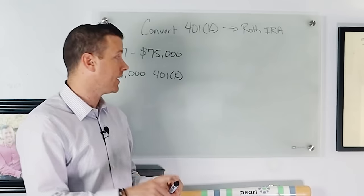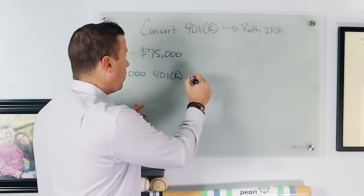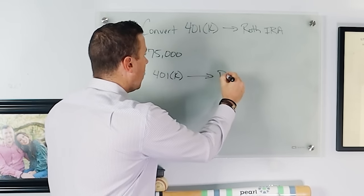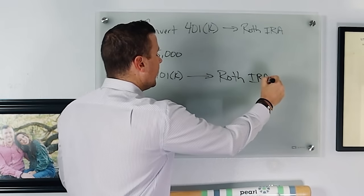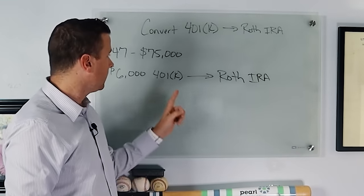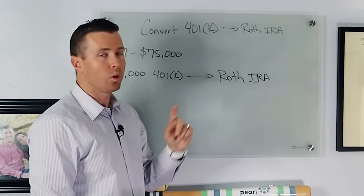And so the question he's asking is, should I move this old 401k over to a Roth IRA? And why would you do that? Why would you move it from a 401k to a Roth IRA?